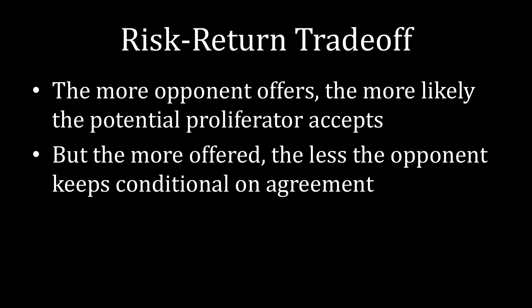In any case, the key takeaway here is that uncertainty can lead to bargaining breakdown. In particular, the recipe for disaster is that the opponent thinks the potential proliferator has a high cost to develop nuclear weapons or a low willingness to do so, and is wrong in its assessment. That means the opponent offers insufficient concessions to the potential proliferator. That potential proliferator, which is actually willing and has low costs to develop nuclear weapons, rejects the demand and builds a nuclear weapon instead.